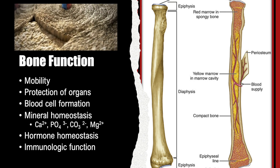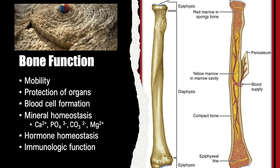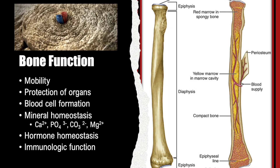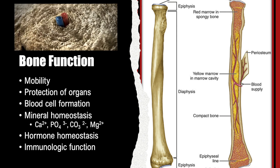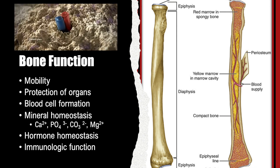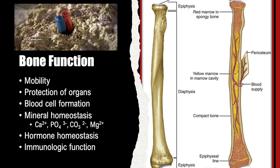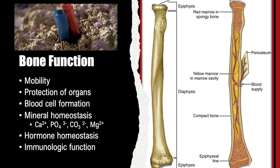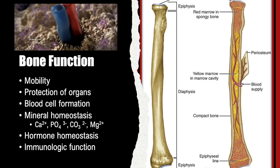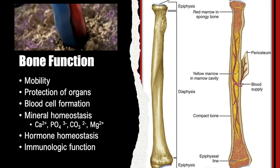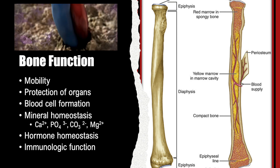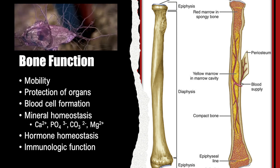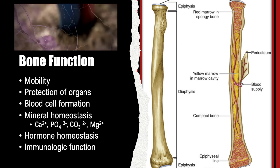Within certain bones, the marrow cavities serve as storage sites for the hematopoietic stem cells that form both blood and immune cells. In adults, blood cells originate exclusively in the marrow cavities of the skull, vertebrae, ribs, sternum, shoulders, and pelvis.